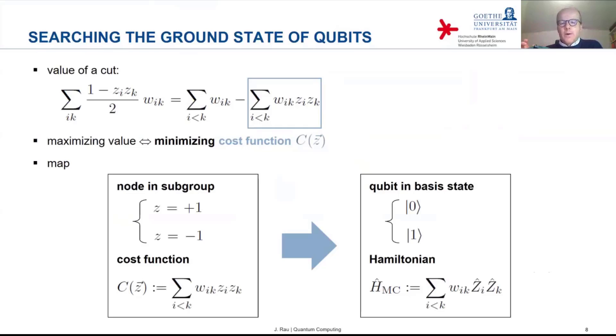And the basis state one is an eigenstate with eigenvalue minus one. So if you apply the Hamiltonian to the basis states now of all the qubits, then every qubit in the basis state zero will give you a plus one when the Pauli operator is applied to that basis state. And every basis state one will give you an eigenvalue minus one.